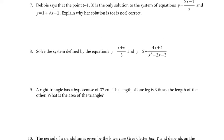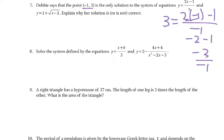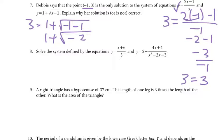It says Debbie says that the point negative 1, 3 is the only solution to this system of equations. Explain why her solution is or is not correct. First thing I would check, do they work for both? So if I plug in 3 for y and negative 1 for x, does it work out? 2 times negative 1 is negative 2 minus 1 is negative 3 over negative 1 is a positive 3. So that one worked. Now let's try this one. 3 for y, 1 plus the square root of negative 1 minus 1. Negative 1 minus 1 is negative 2. 1 plus the square root of negative 2. That's an imaginary number. So that one definitely does not work. So why isn't it correct? Because it doesn't work for both.